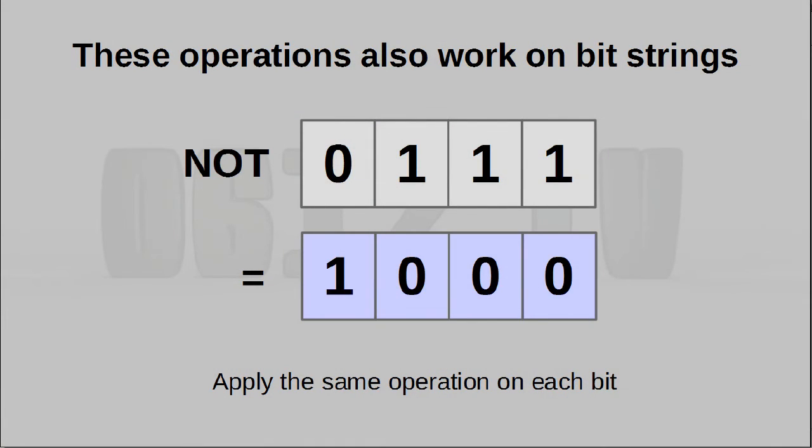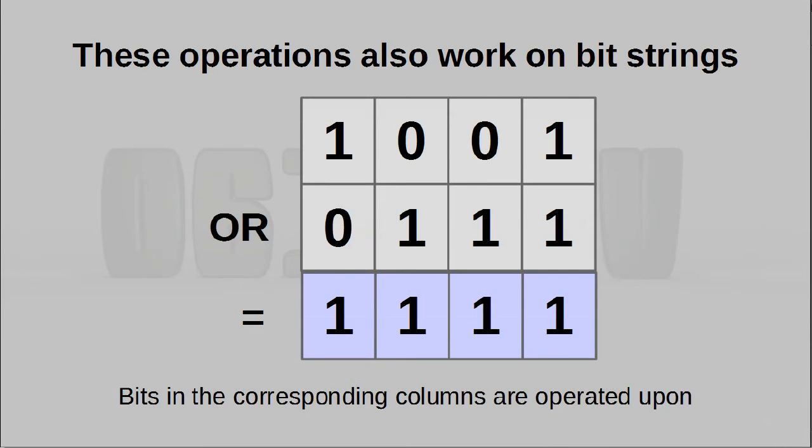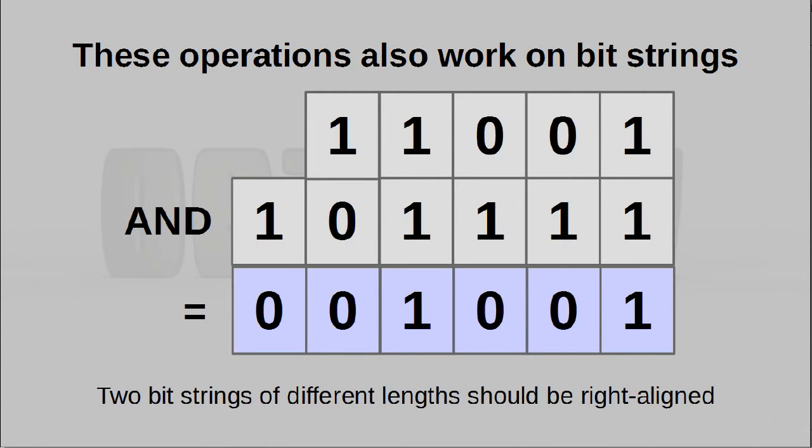Now these operations don't just work on single boolean values. If you give it a bit string, then the same operation is basically done iteratively on every single bit. If your operation takes in two inputs, and the two inputs are of different lengths, then you align them towards the right, just like you would when you are doing say addition. You align everything to the right, and everything in the corresponding columns will be operated on against each other.